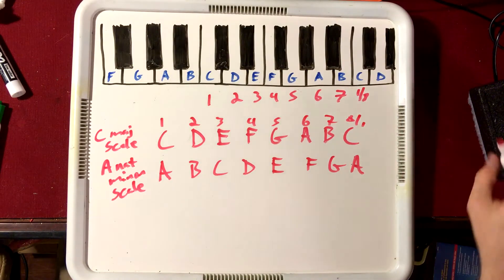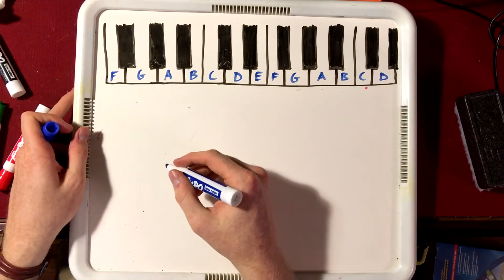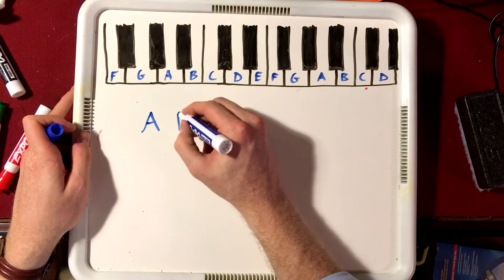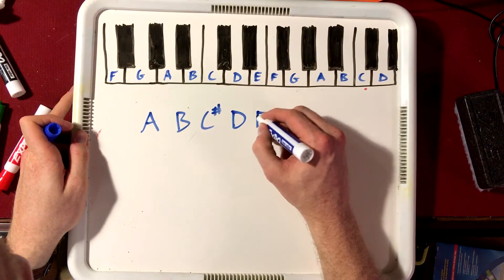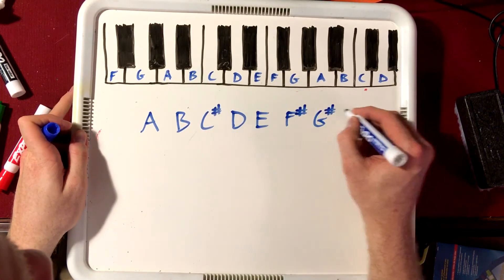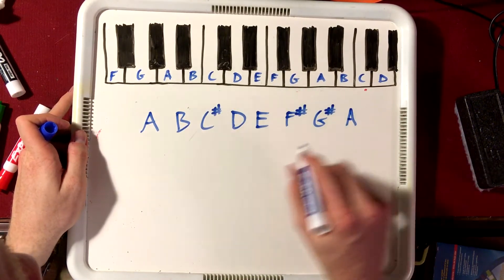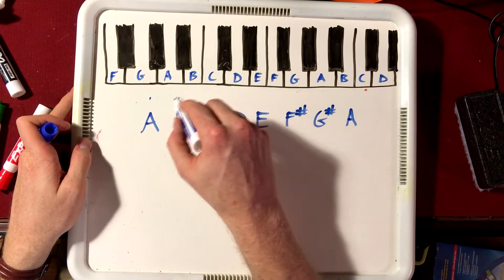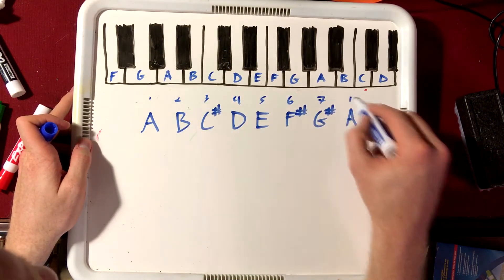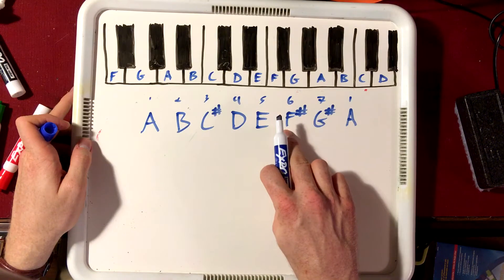Okay, so let me give you another example of that. Let's look at the key of A. We have A, B, C sharp, D, E, F sharp, G sharp, and then back to our A again. So if we look at our numbers here, we have one, two, three, four, five, six, seven, one. Our sixth here is our relative minor.